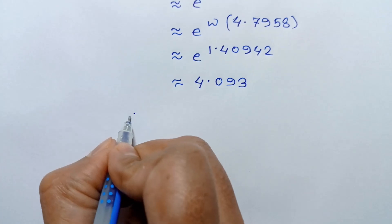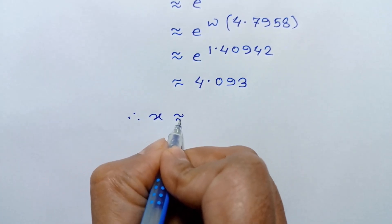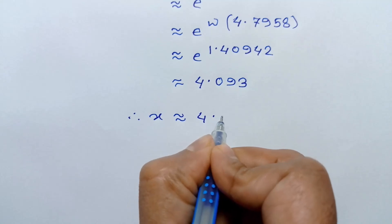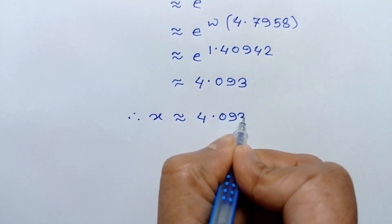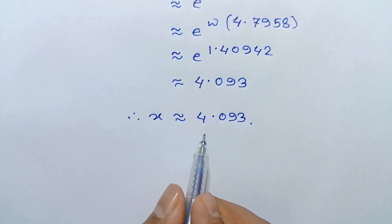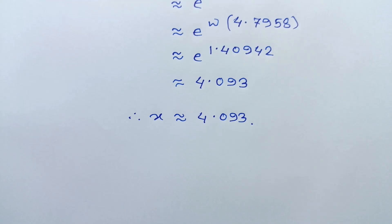So the approximate value of x is 4.093. This is the solution of this equation.